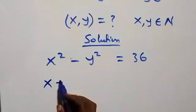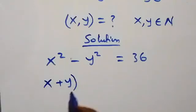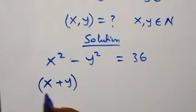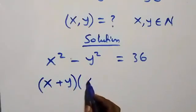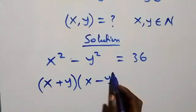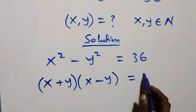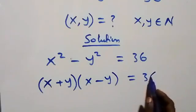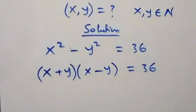This becomes (x plus y) times (x minus y), equals to 36.